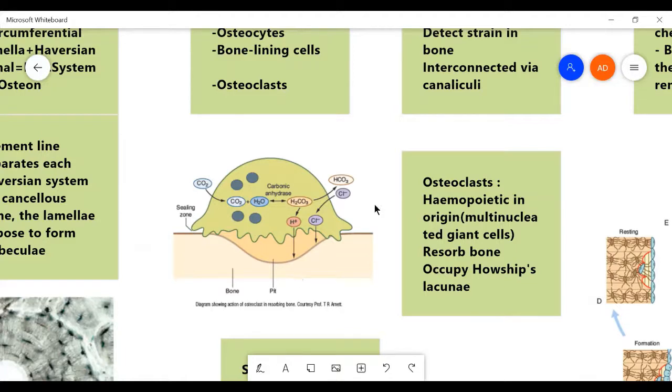An osteoclast is something to look at very closely. It has two sealing zones on both sides. And it basically uses carbonic acid to dissolve bone.